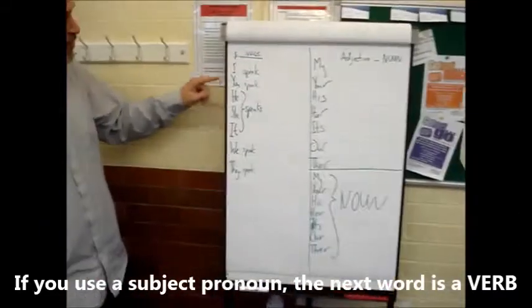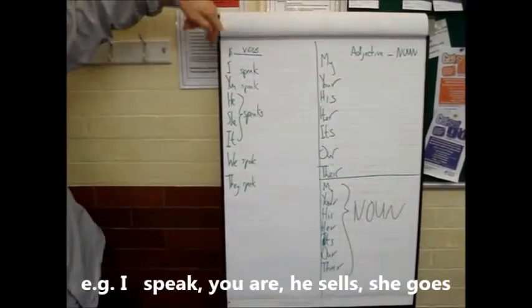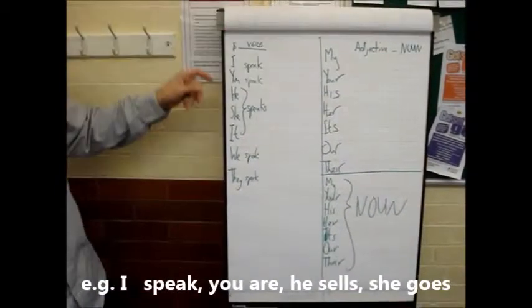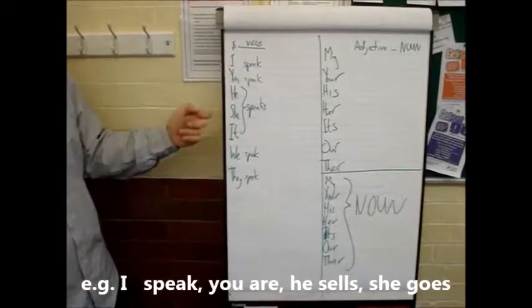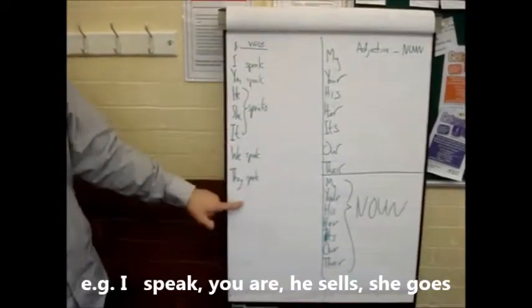If you use I, you, he, she, it, we or they, next word is a verb. I speak, you are, he sells, she goes. Next word is always a verb.